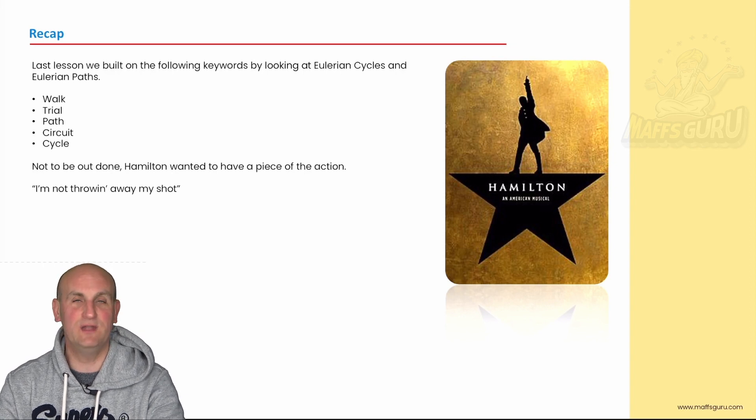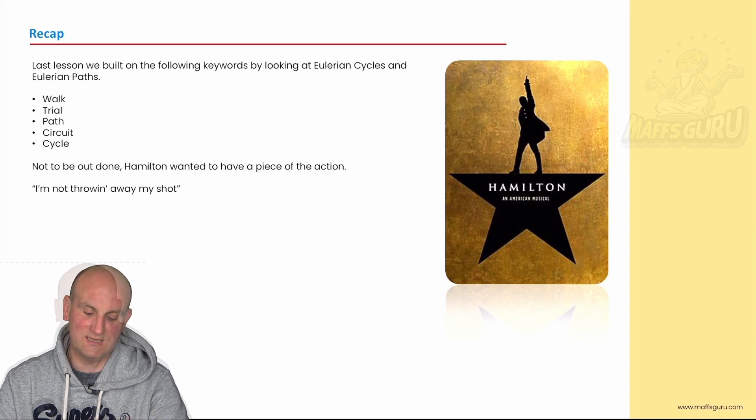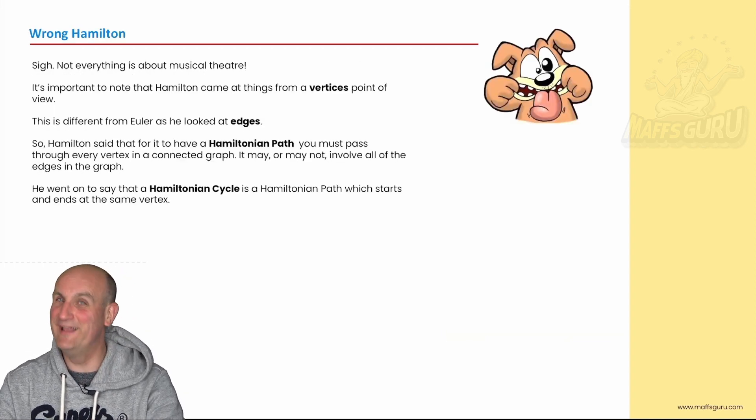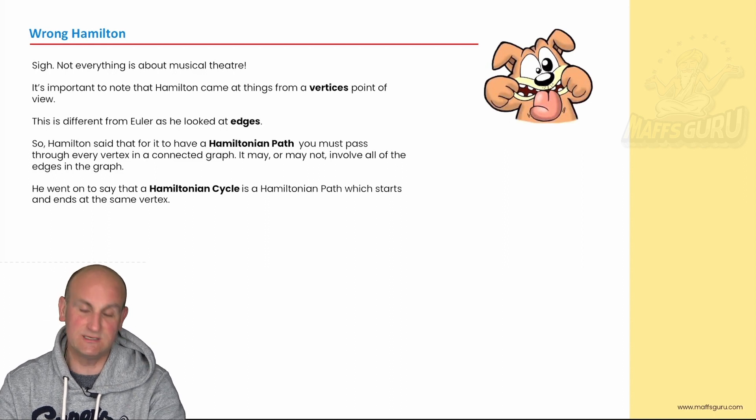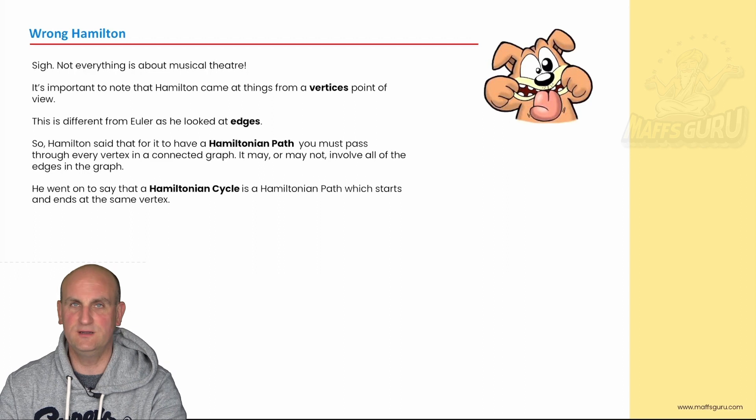As far as I'm concerned I have no idea who this Hamilton is. He's probably some famous mathematician like Euler but we've been dealing with walks and trails and paths and cycles and circuits. I know the little picture of the dog that's what you noticed wasn't it. That was me going silly Billy. All right I'm not trying to talk down to you. Now Hamilton in this situation was a dude who said well if Euler's got edges I'm going to deal with vertices.